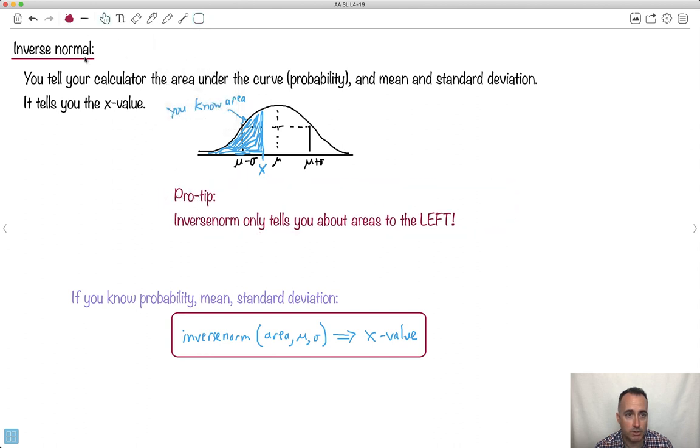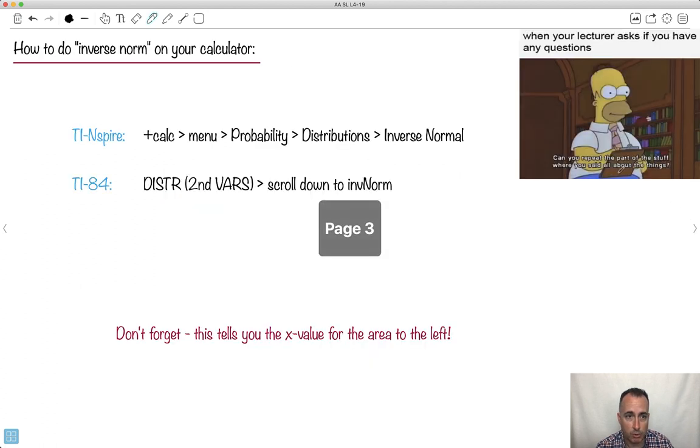Inverse norm only tells you about areas to the left. This is how inverse normal works. I could not stress this possibly enough. So when you're doing something like this right here, and you're looking for this right here, and this is your area to the left, that's what it does. It's only to the left. If you want something to the right, you're going to have to think carefully about what to feed your calculator.